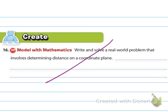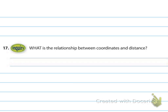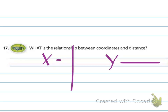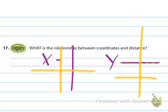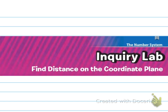Number six asks you to write and solve a real-world problem — those answers will all be different. The overall relationship between coordinates and distance: if one coordinate value is the same for both points, they form a line — if the x's are the same it's a vertical line, and if the y's are the same it's a horizontal line. That's the end of the lesson — sorry for such a long video, hopefully you could fast forward through some of it. Have a great day, see you in school!